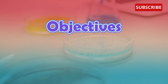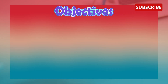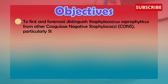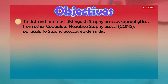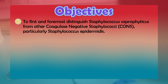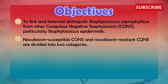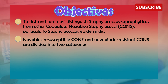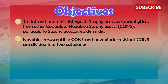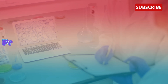The objective of this test is first and foremost to distinguish Staphylococcus saprophyticus from other coagulase-negative staphylococci, particularly Staphylococcus epidermidis. Novobiocin-susceptible coagulase-negative staphylococci and novobiocin-resistant coagulase-negative staphylococci are divided into two categories.